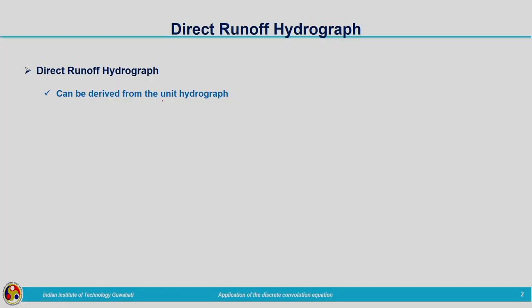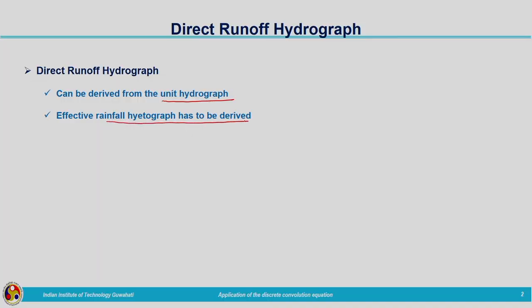Today let us move on to the derivation of direct runoff hydrograph if the unit hydrograph is available to us. Along with the unit hydrograph we need to have the effective rainfall also. We will look into the concepts related to derivation of direct runoff hydrograph, which can be derived by means of unit hydrograph theory. For a particular basin, if the unit hydrograph is available, we can derive the corresponding direct runoff hydrograph if the effective rainfall data is identified properly.